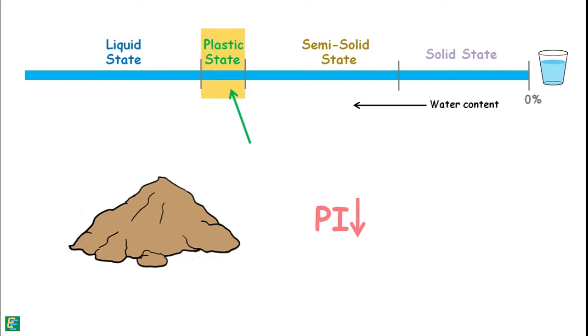This soil can hold very less amount of water, and with little increase of water it reaches to its liquid limit and starts flowing.